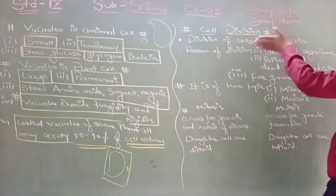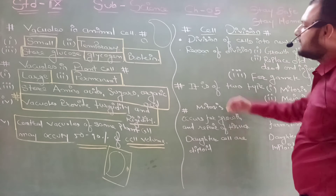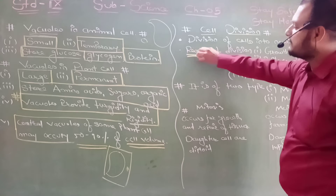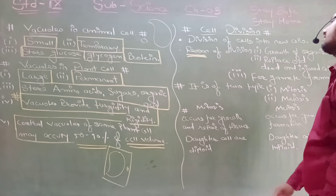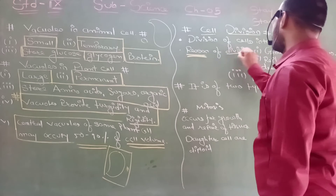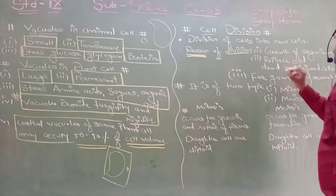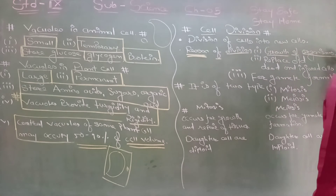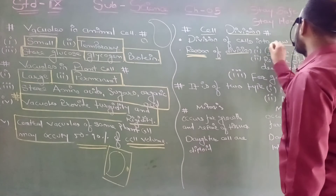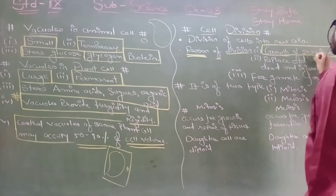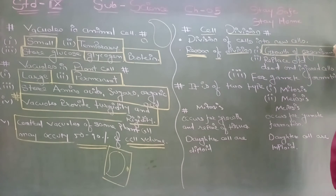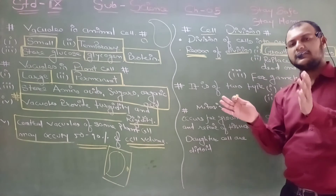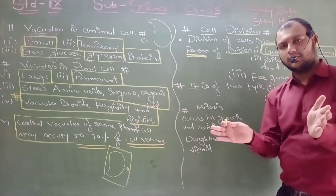Cell division means the division of a cell into new cells. The reasons for cell division can be asked in exams. The first reason is growth of the organism. For a newborn baby to grow into an adult, the number of cells inside must increase.